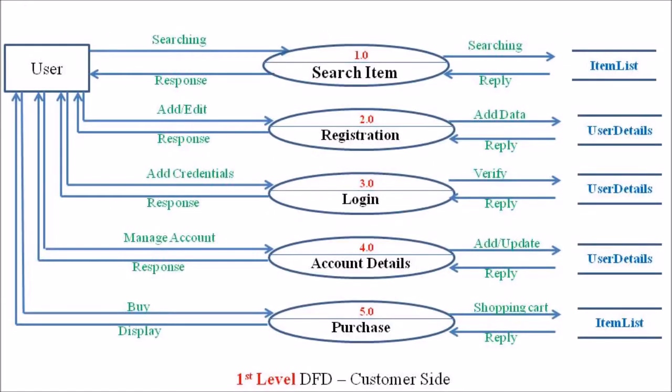Expanding to the first level DFD on the customer side, there are five basic processes. The first process is search item, marked as 1.0. This search item process communicates with the item list database or data store. The search item process communicates back and forth with searching and reply messages, which are data flows. A user gives a search input and the process handles it using the item list data store.